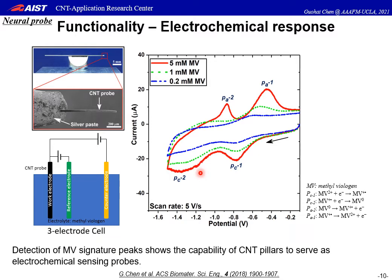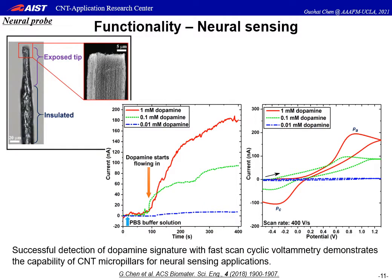The first application is the neural probe. To begin with, we checked the functionality of the CNT pillars as a neural probe. An individual probe was used for this electrochemical response test using cyclic voltammetry. Here are the typical cyclic voltammetry curves of messy biology with its characteristic signature peaks. This result clearly indicates the capability of CNT pillars to serve as electrochemical sensing probes. For neural sensing applications, we investigated the direct detection of dopamine using fast-scan cyclic voltammetry. Here I show the current changes associated with the dopamine concentration and its signature peaks.